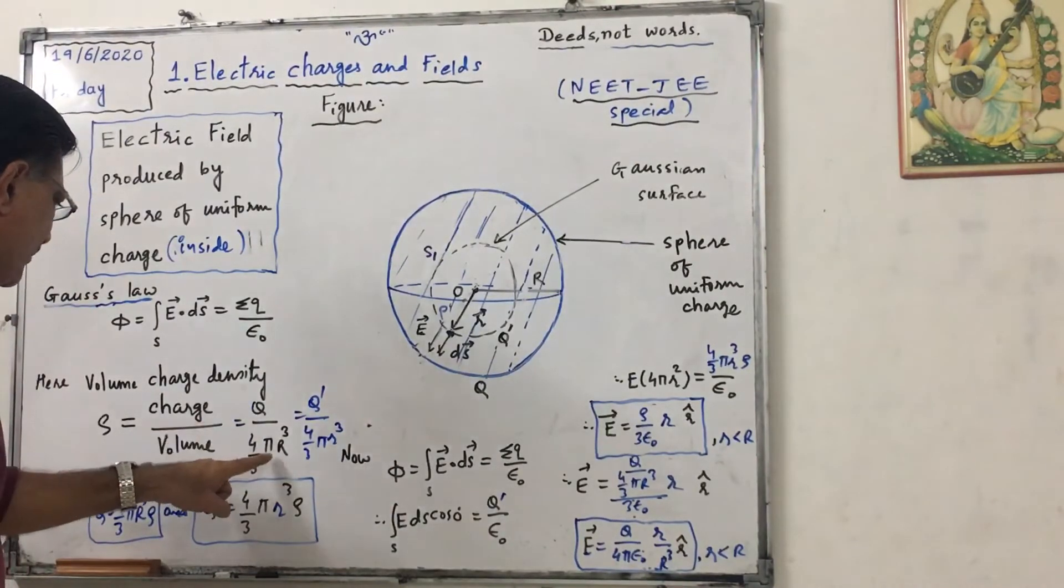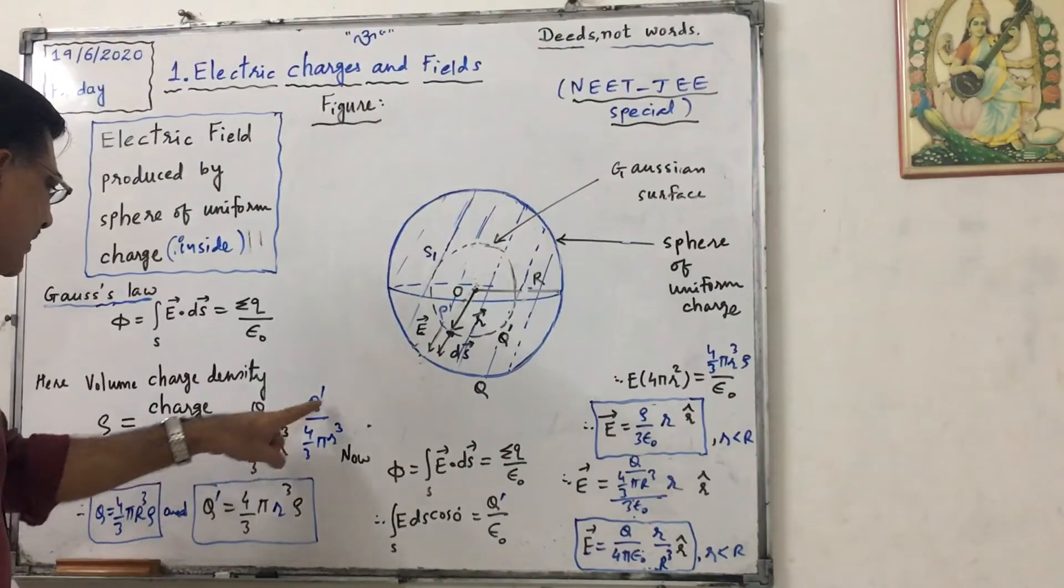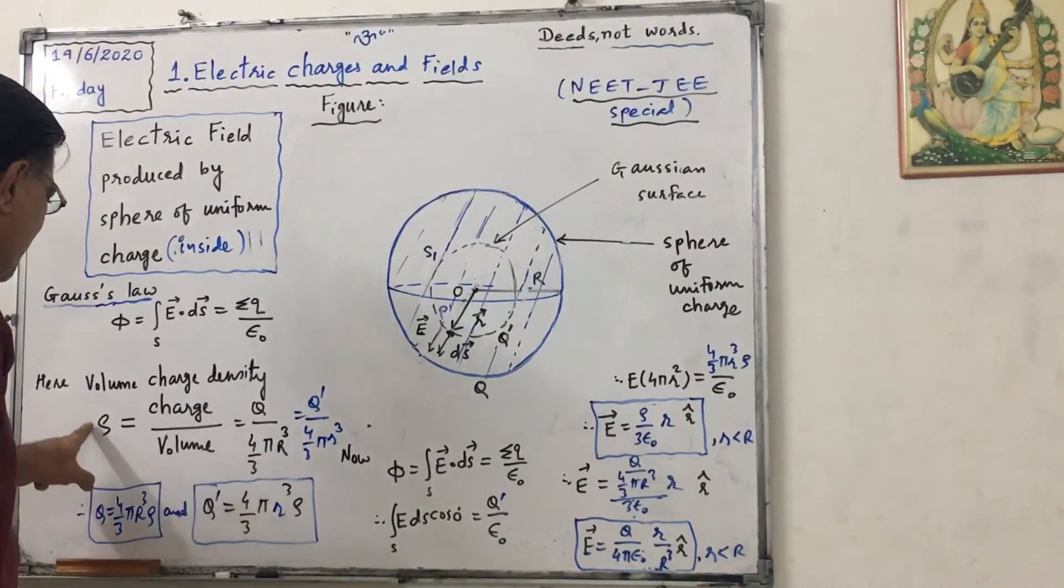From this we can say capital Q equals to 4 upon 3 pi capital R cube rho, and from this we can say q dash equals to 4 upon 3 pi small r cube into rho.